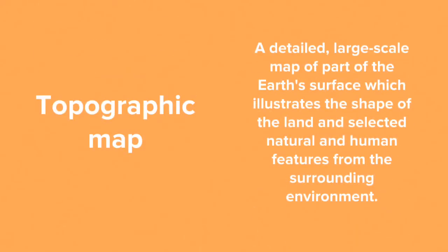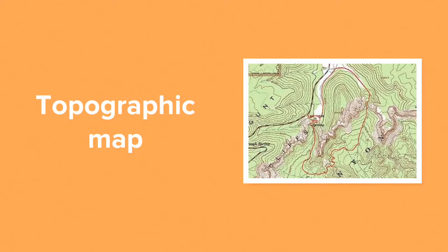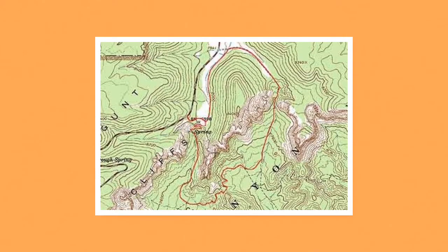Let's begin with a topographic map. This is a detailed, large-scale map of part of the Earth's surface which illustrates the shape of the land and selected natural and human features from the surrounding environment. They look a lot like this map to the right — this is a map of Bryce Canyon in the US. You can see from the contour lines that Bryce Canyon is an incredibly steep and rocky part of the world.